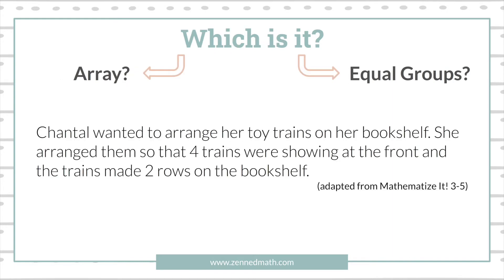Let's look at this word problem adapted from the Mathematize It book for grades 3-5. I want us to go through this math story and pause to decide if this is an array word problem or an equal groups word problem. Here's the word problem: Chantelle wanted to arrange her toy trains on her bookshelf. She arranged them so that four trains were showing at the front, and the trains made two rows on the bookshelf. Which word problem type would this be considered?